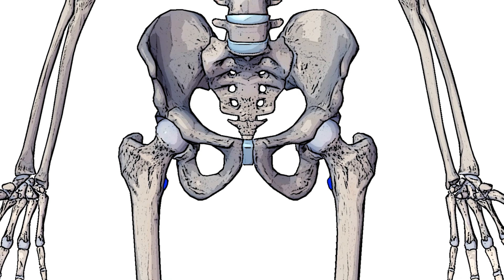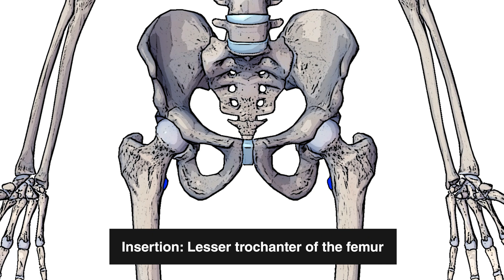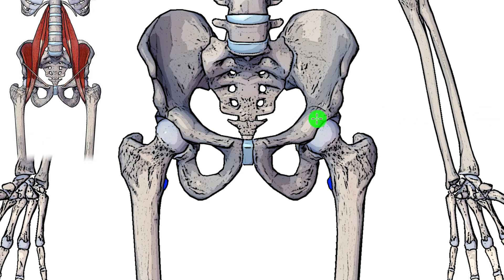Now let's take a look at the insertion, marked out here in blue on either side — that's going to be on the lesser trochanter of the femur. Both the iliacus and the psoas major share this insertion point. The psoas major and iliacus come down and merge together, forming a common tendon that connects onto the lesser trochanter of the femur.